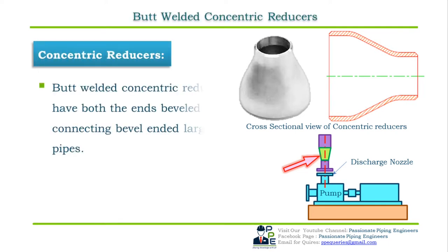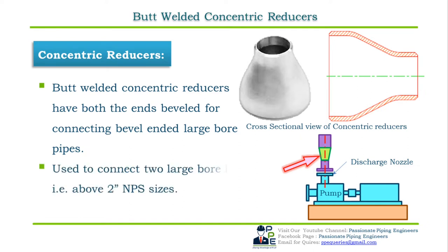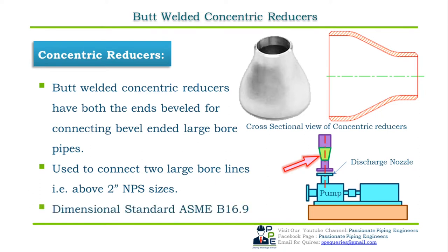Butt welded concentric reducers have both ends beveled for connecting beveled large bore pipes, as shown in the cross-sectional view. They are used to connect two large bore lines or pipes — that is, line sizes above 2-inch NPS — for example, 8-inch NPS to 6-inch or 4-inch NPS. The dimensional standard for butt welded concentric reducers is ASME B16.9.